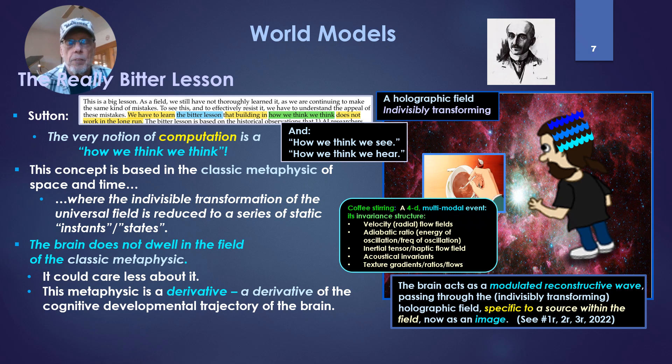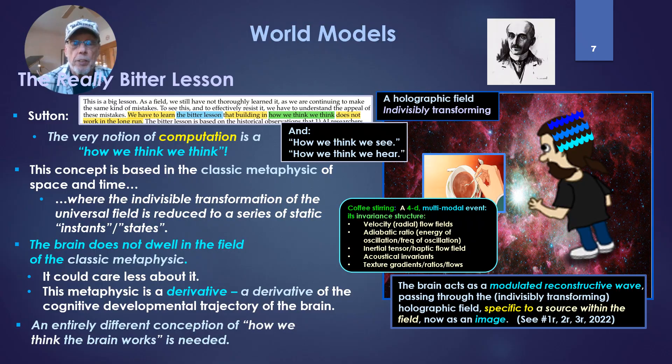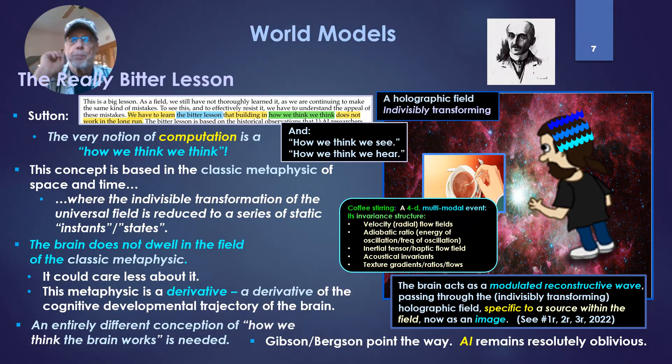So an entirely different conception of how we think the brain works is needed. Gibson, Bergson, in my opinion, point the way. AI remains resolutely oblivious, not only of Bergson, but even of Gibson in ecological psychology. Though the ecological psychology folks I'd known before have a bit of blame for not understanding what they've got.